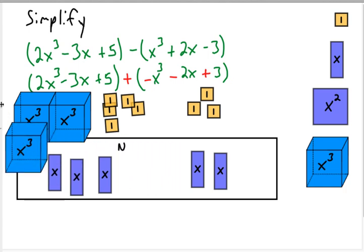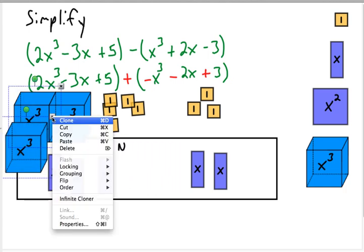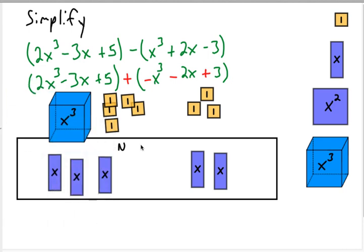This x cubed and this x cubed are going to cancel each other out, so we get rid of those. Nothing else cancels. So I'm going to end up with a positive x cubed. It looks like 1, 2, 3, 4, 5 negative x's — so I can put negative 5x. And then 1 through 8 positive ones. All right, so let's try our next problem.